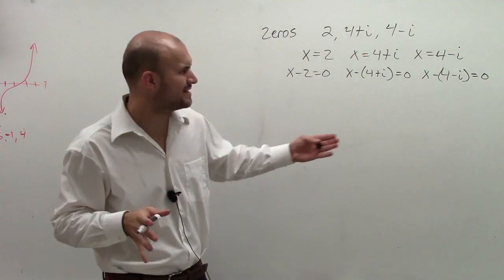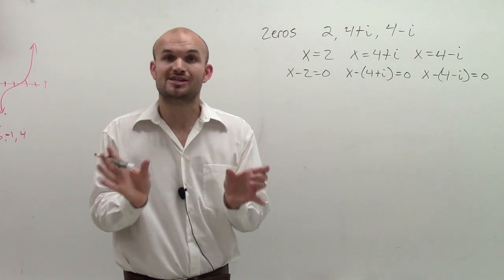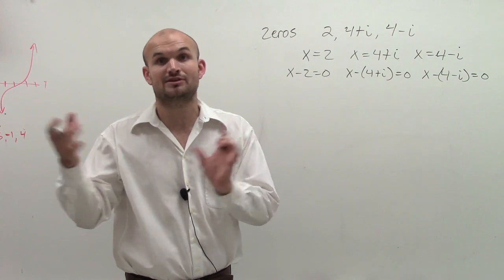And remember, why do they set it equal to 0? Because when we factor something, we get it down to its factors, we use the zero product property to set each factor equal to 0.